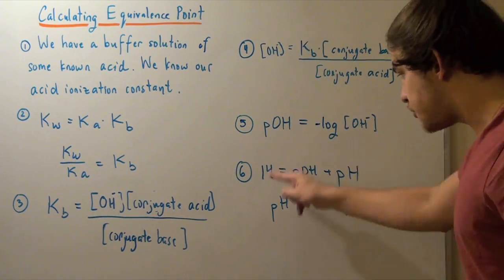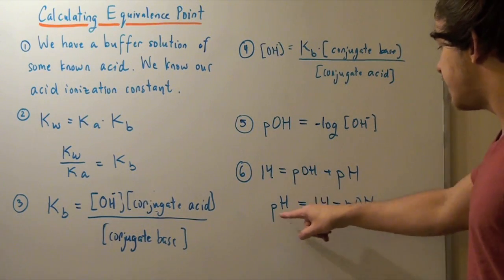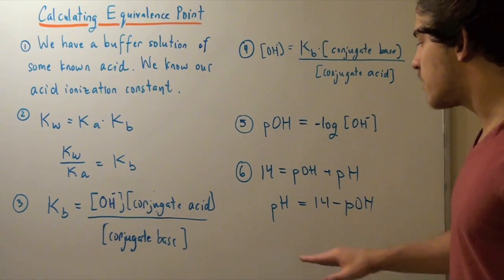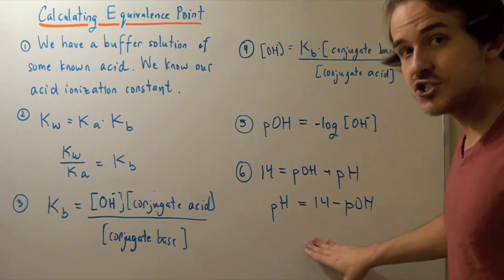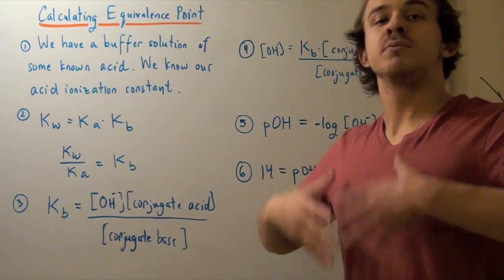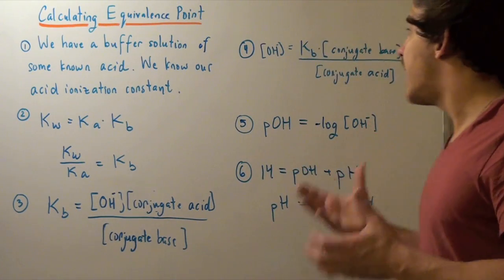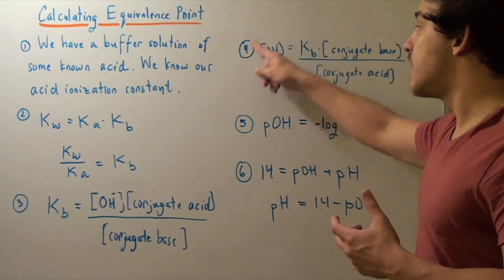So, I basically rearrange and find my pH. Now, remember, the pH represents the equivalence point, right? It's the point at which all my acid has been completely neutralized by the base that I just found, the amount of base. And that's how you find the equivalence point of a buffer solution.